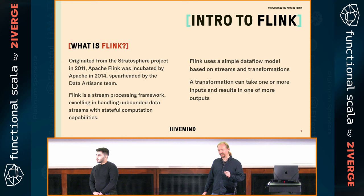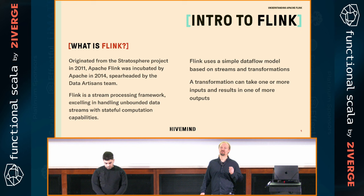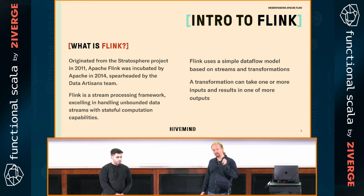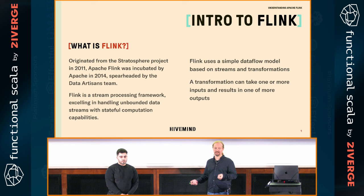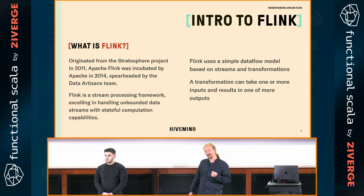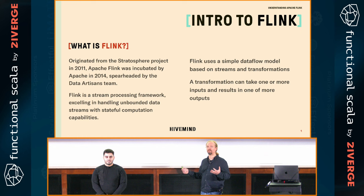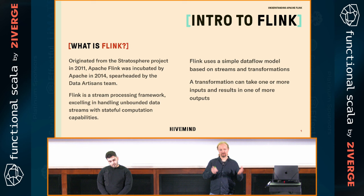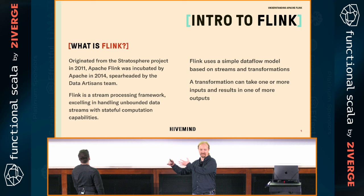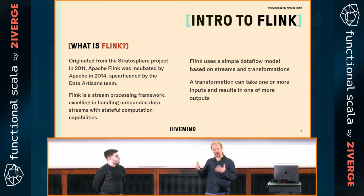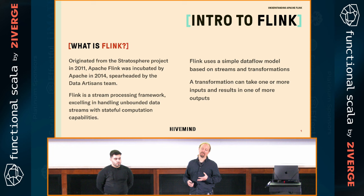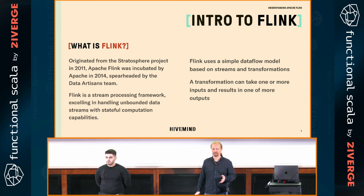The major thing about Flink that is different is that it is a stream-first framework. It takes unbounded data streams and provides the ability to do stateful computation on top of those streams. Flink uses a very simple dataflow model — a typical stream topology approach. You basically have streams and transformations: an incoming stream, a transformation, and an outgoing stream. Processors can take one or multiple streams in, do some transformation, and output them to other streams.